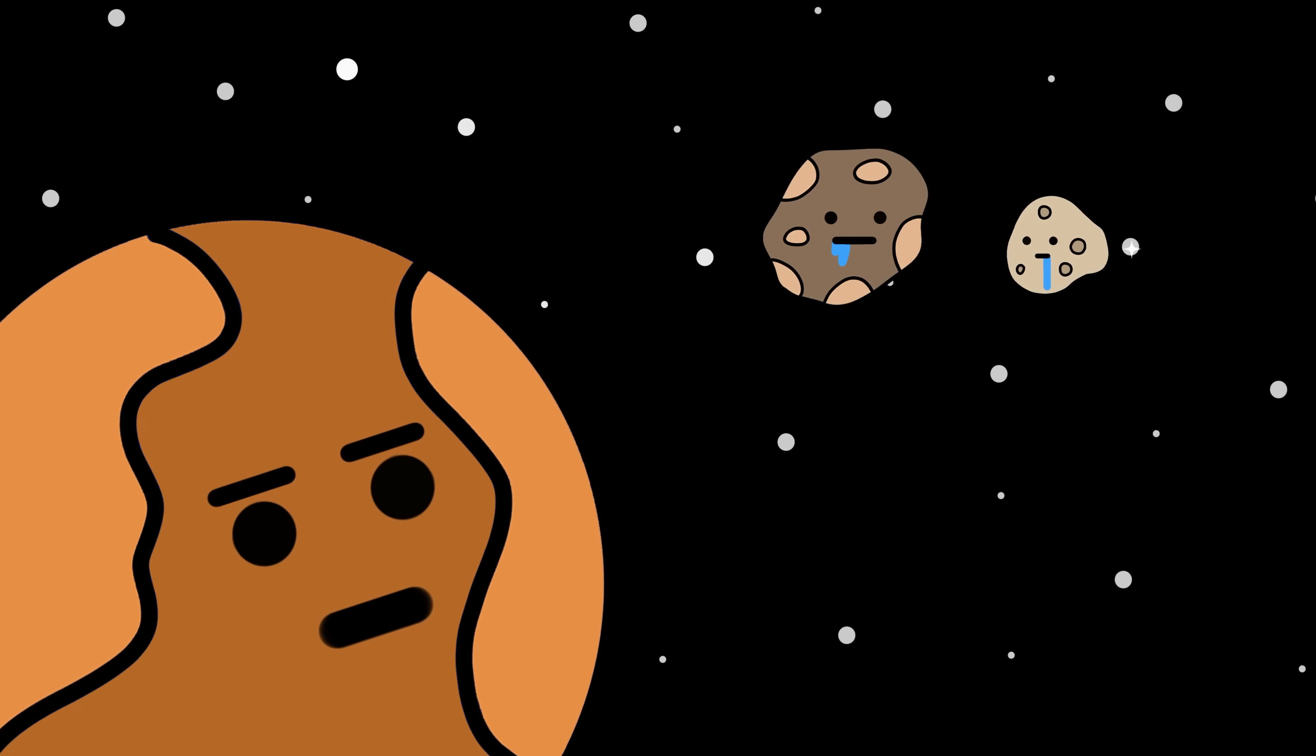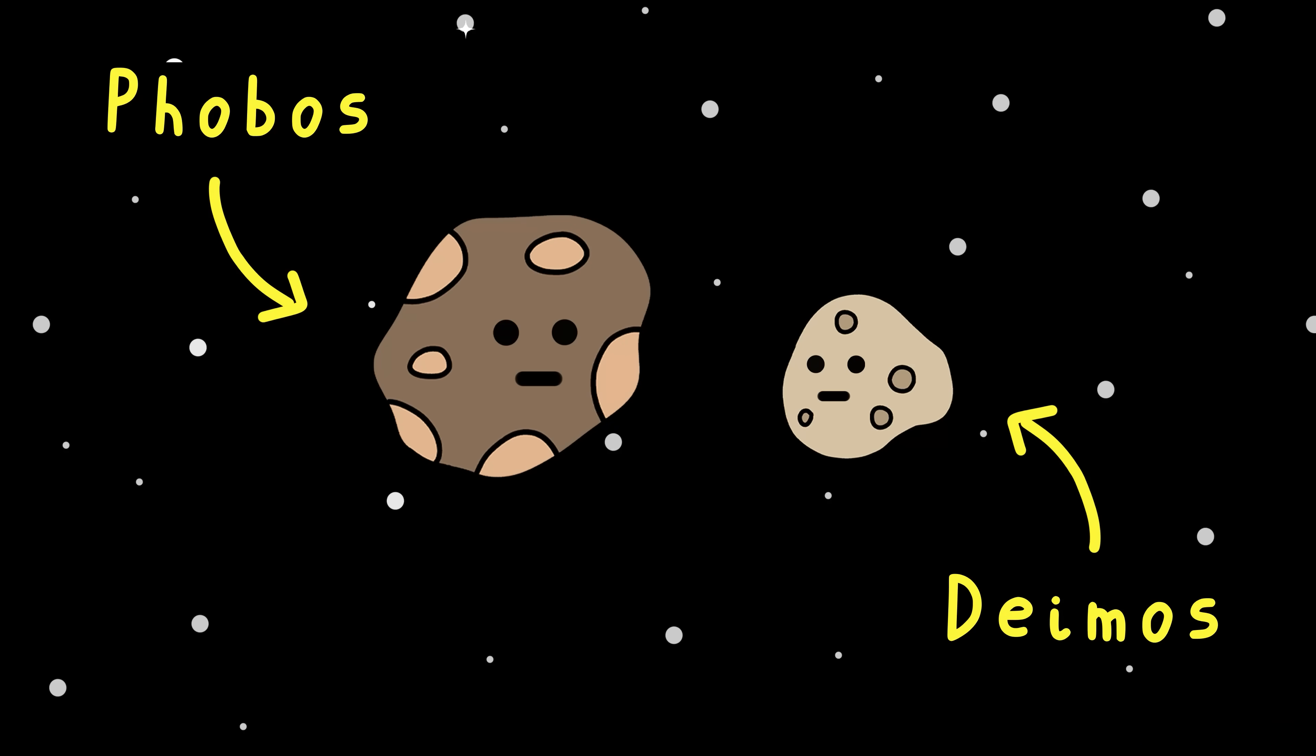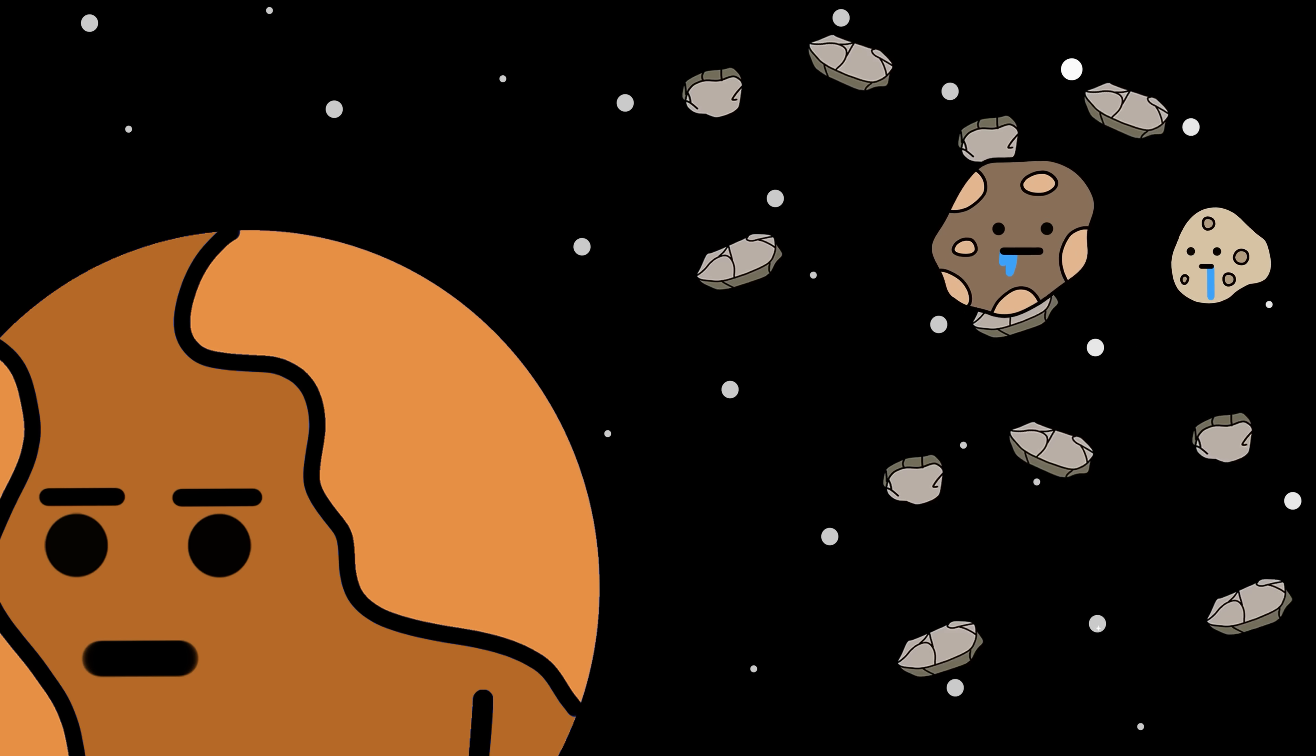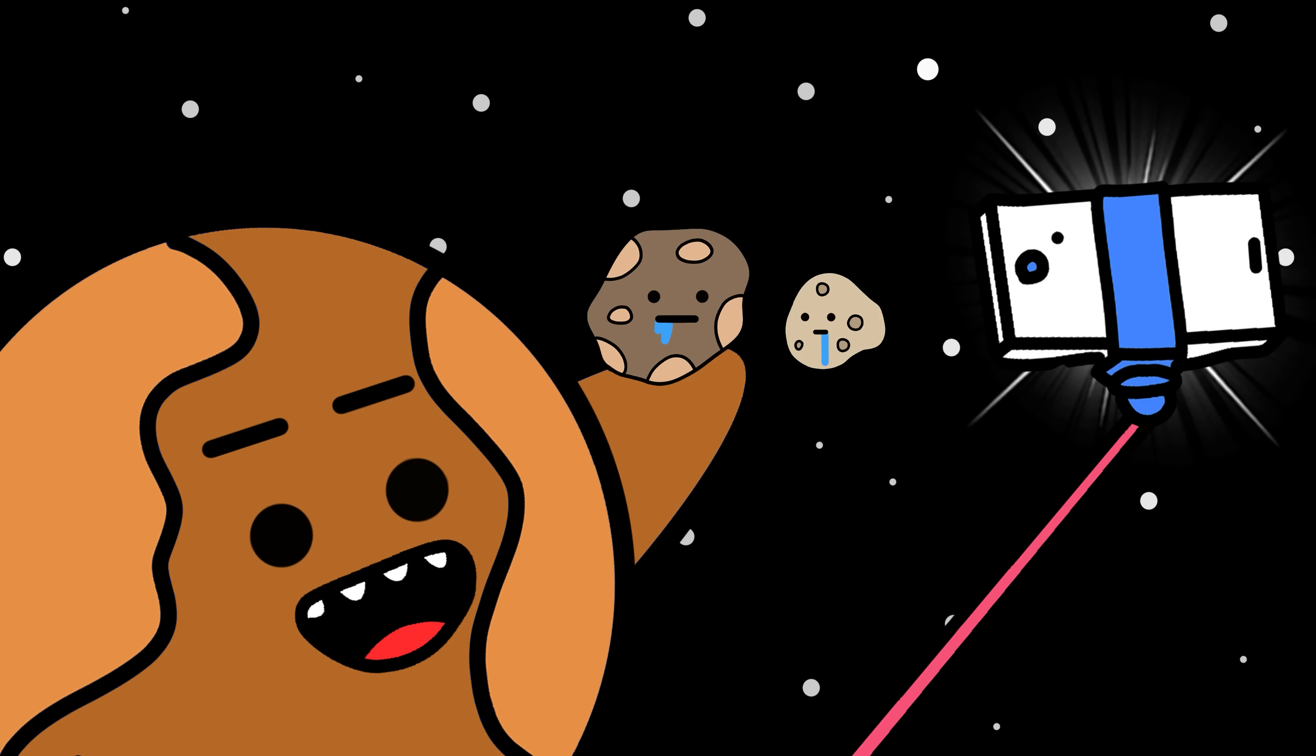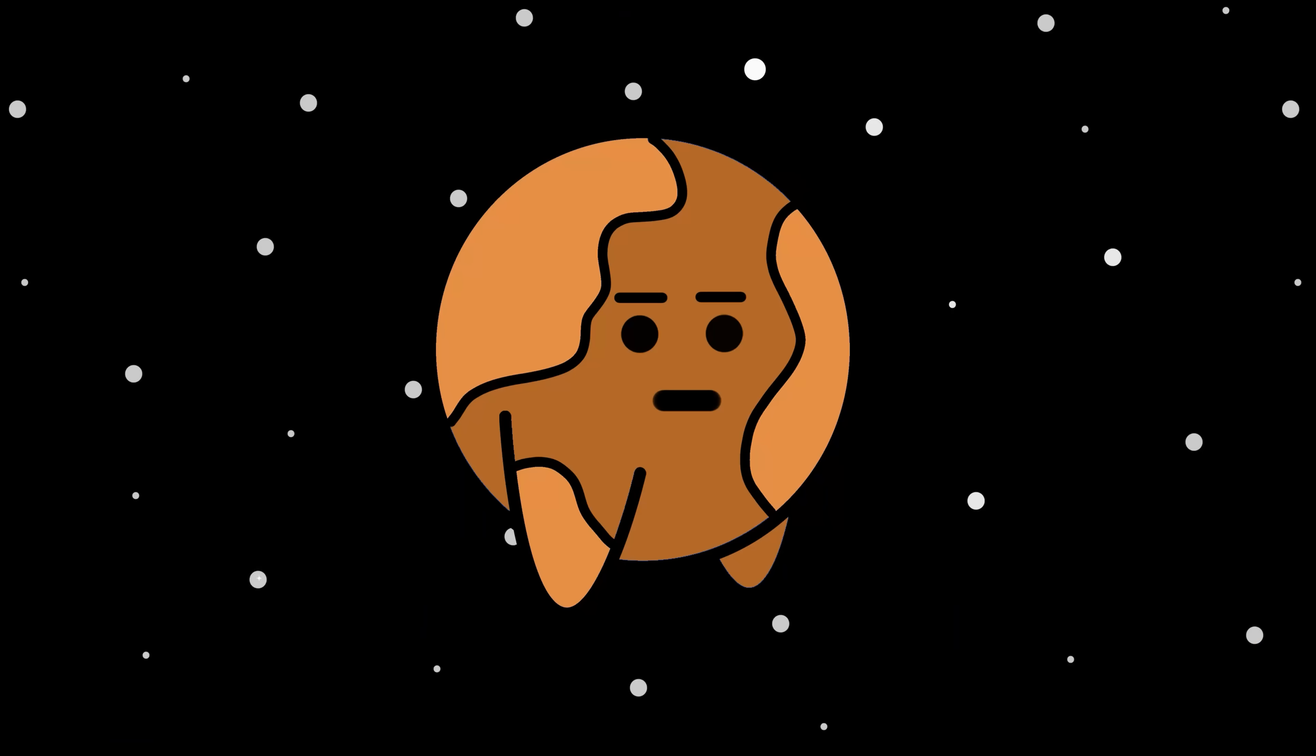Seriously, these things are so ugly they make actual potatoes look like supermodels. Meet Phobos and Deimos, the most underwhelming moons in the solar system. They're irregular, tiny, and covered in dust like they haven't showered in billions of years. They're so small they can't even pull themselves into proper spherical shapes. Vile. But given they are most likely just captured asteroids, you decided to adopt them anyway. That's what a popular planet would do. Mr. Beast would be proud.